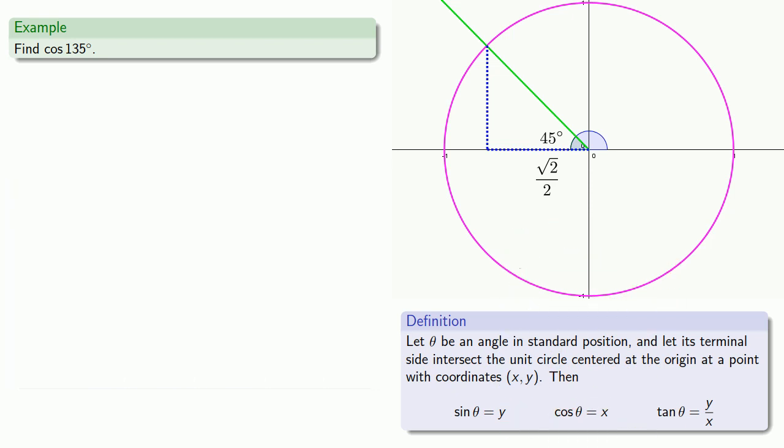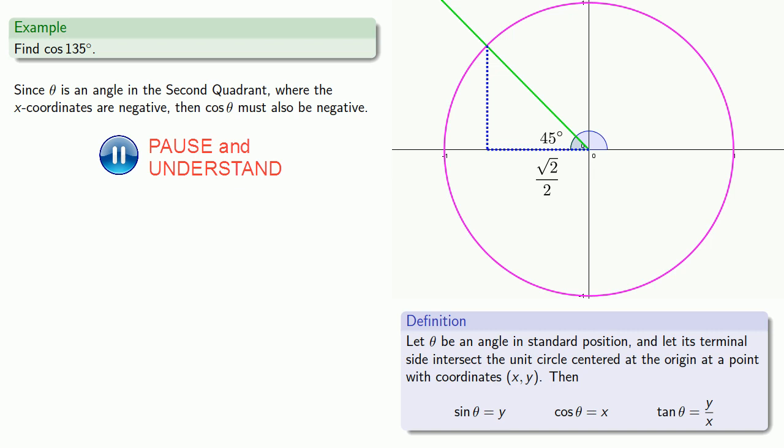And finally, since theta is an angle in the second quadrant, where the x-coordinates are negative, then the cosine of theta must be negative. So cosine of 135 must be negative square root of 2 over 2.